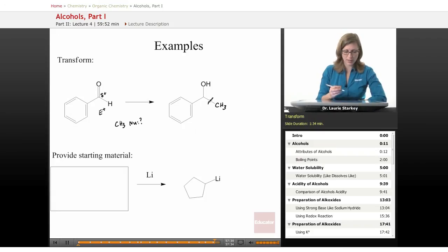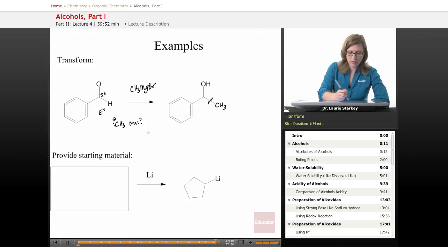Well I think all we need to do, if we had a lone pair and a negative charge that would make it nucleophilic. How do we get to that reactivity in that species? Well that's exactly what a Grignard reagent does. If we have CH3MgBr, that is nucleophilic and that would react with the carbonyl.